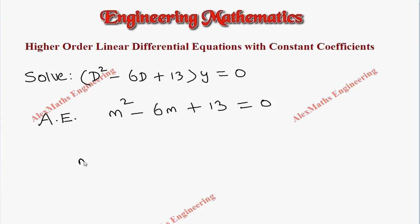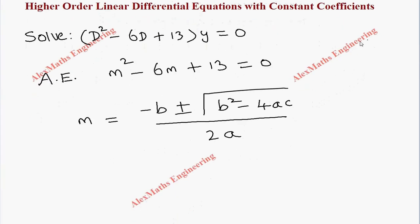Here the equation is in terms of m, so m = (-b ± √(b² - 4ac)) / 2a. The values of a, b, c are the coefficients of m², m, and the constant, so a = 1, b = -6, and c = 13.